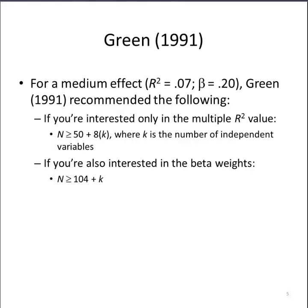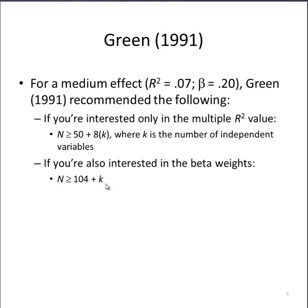It's a larger sample size that you need. You will need to use this formula, according to Green, based on medium effect sizes: 104 plus K, where K is equal to the number of independent variables. So if you had two independent variables, you would need a sample size of 106.